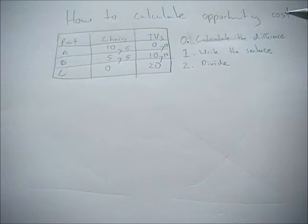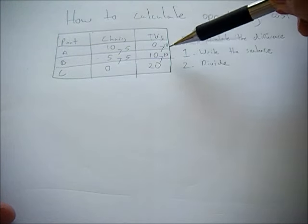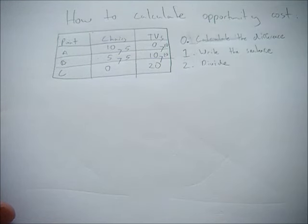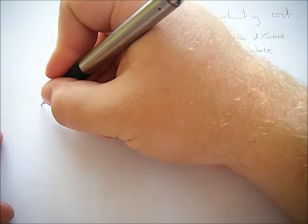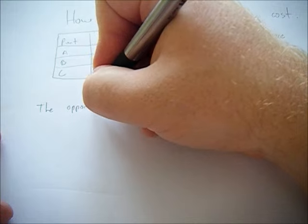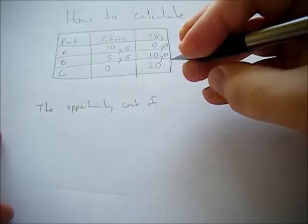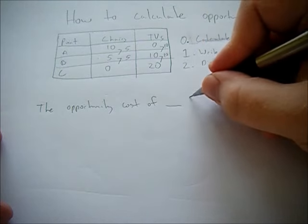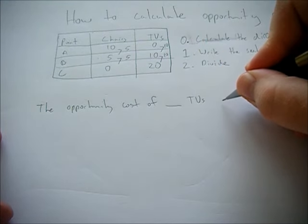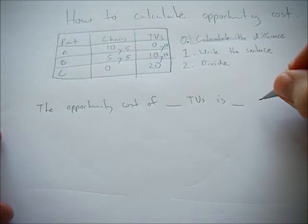We've calculated the difference. Now we need to write the sentence. Let's say we're going from A to B and we're getting 10 TVs. The sentence would be: the opportunity cost of blank TVs is blank chairs.